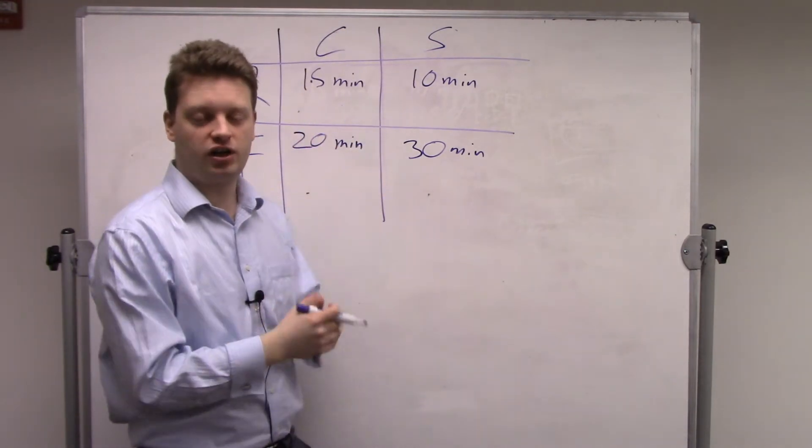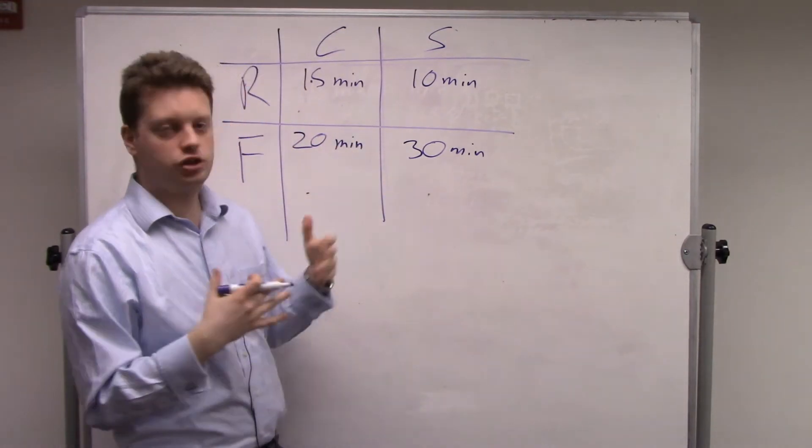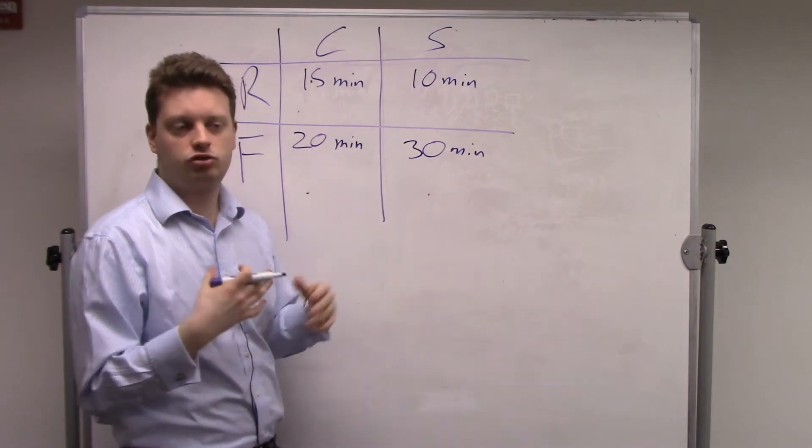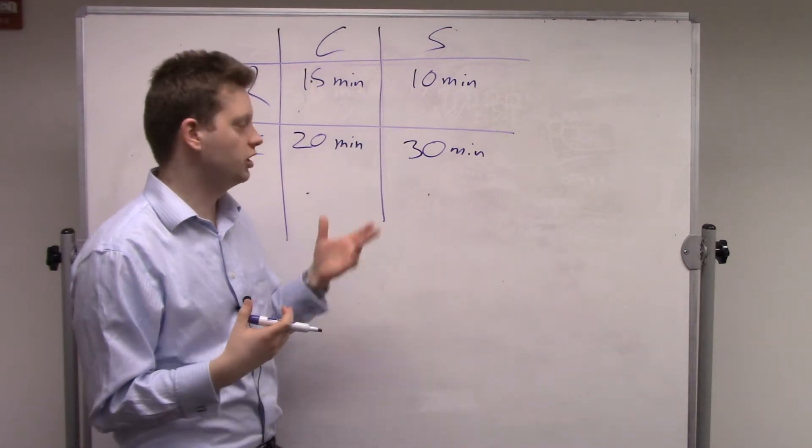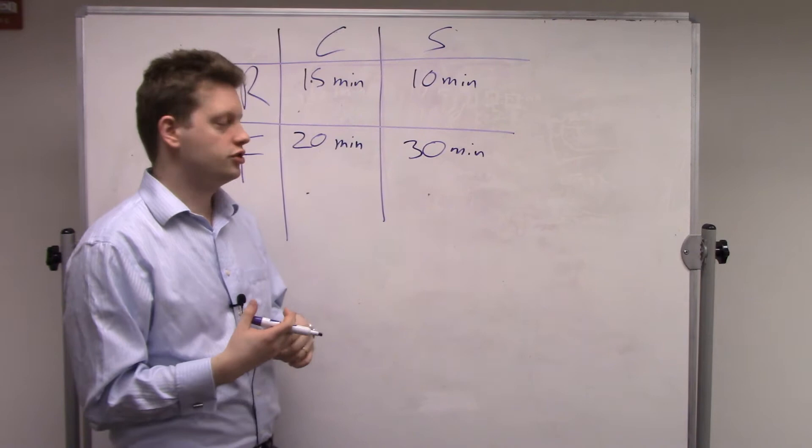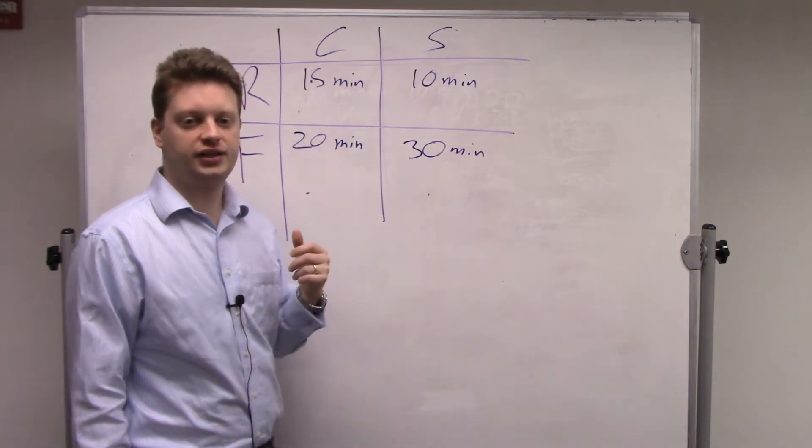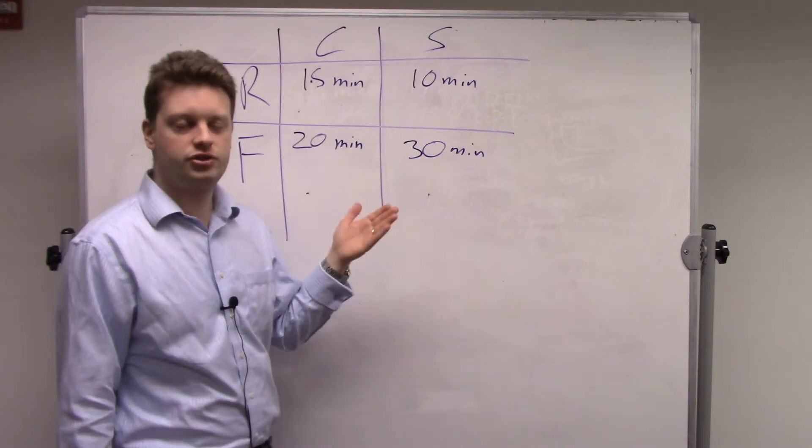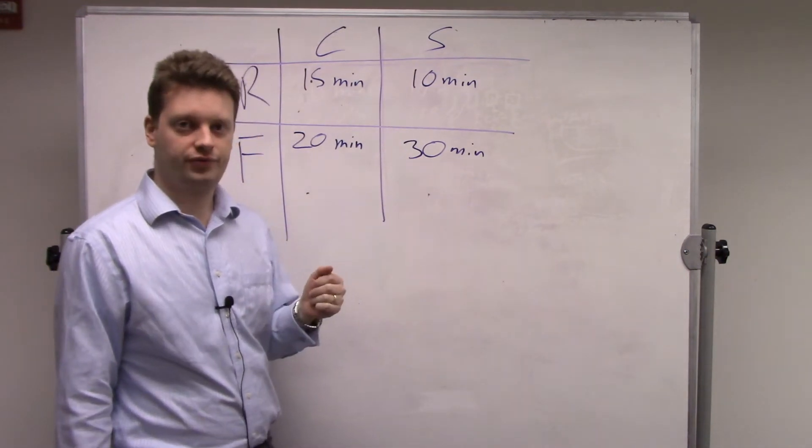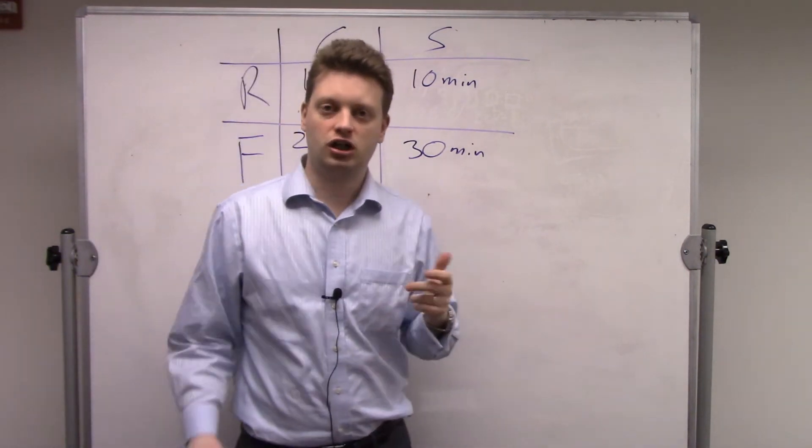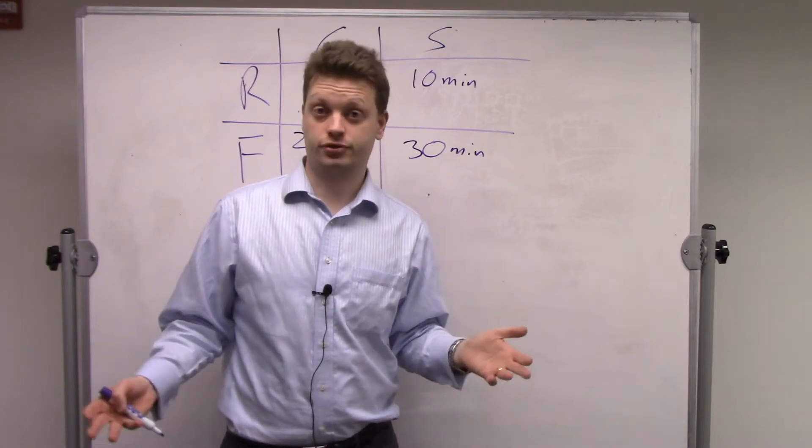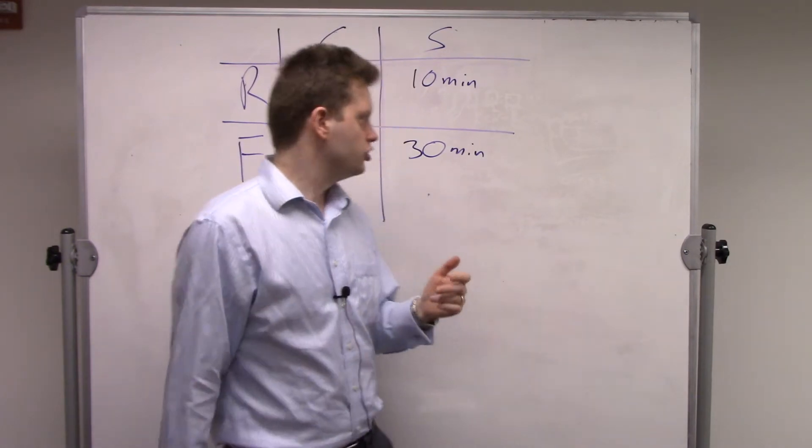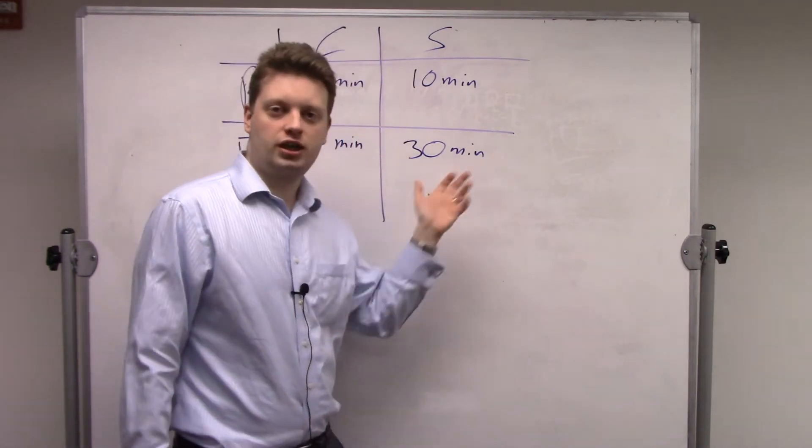Based on this table, we want to figure out who should specialize in what, do they gain from trade, using comparative advantage. If we're faced with a problem like that, we need to first see how much they can produce at a fixed interval. For this fixed interval, let's take a day, eight hours, normal work day.